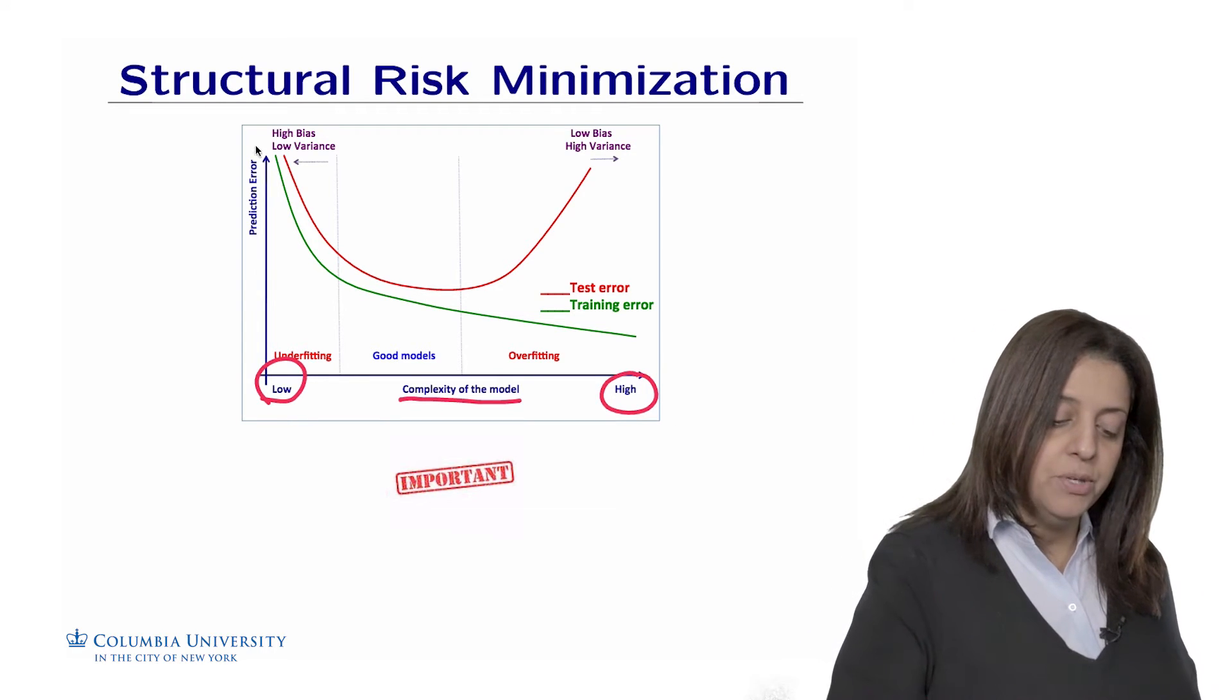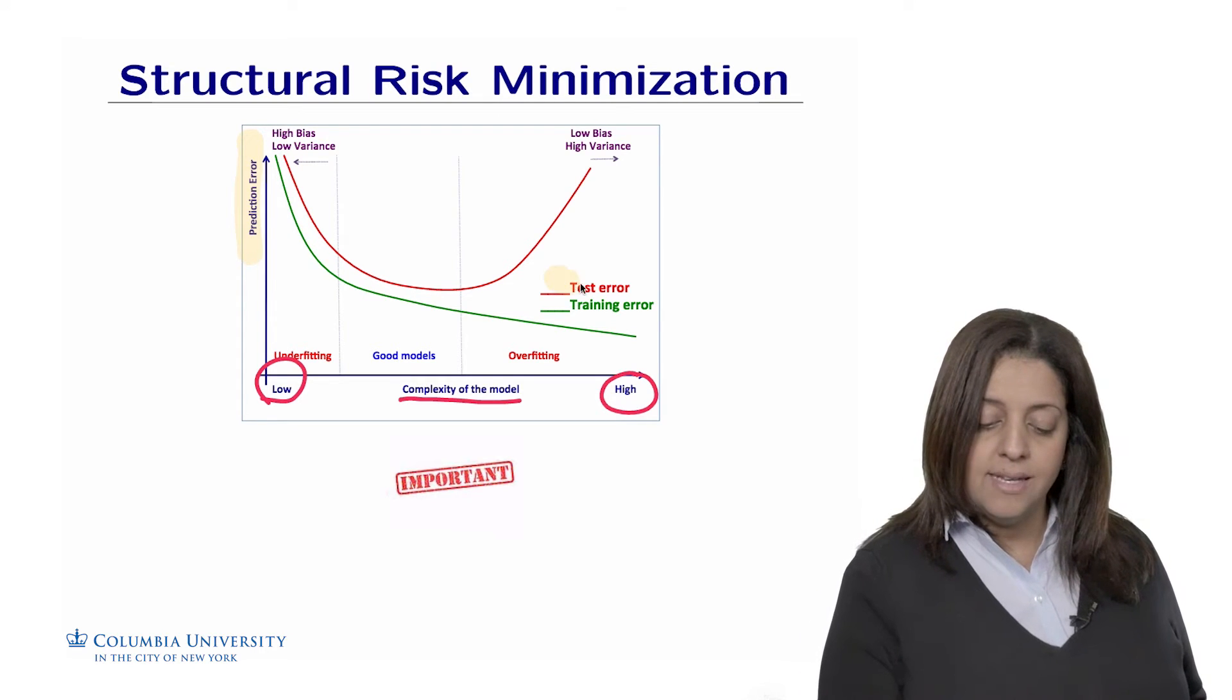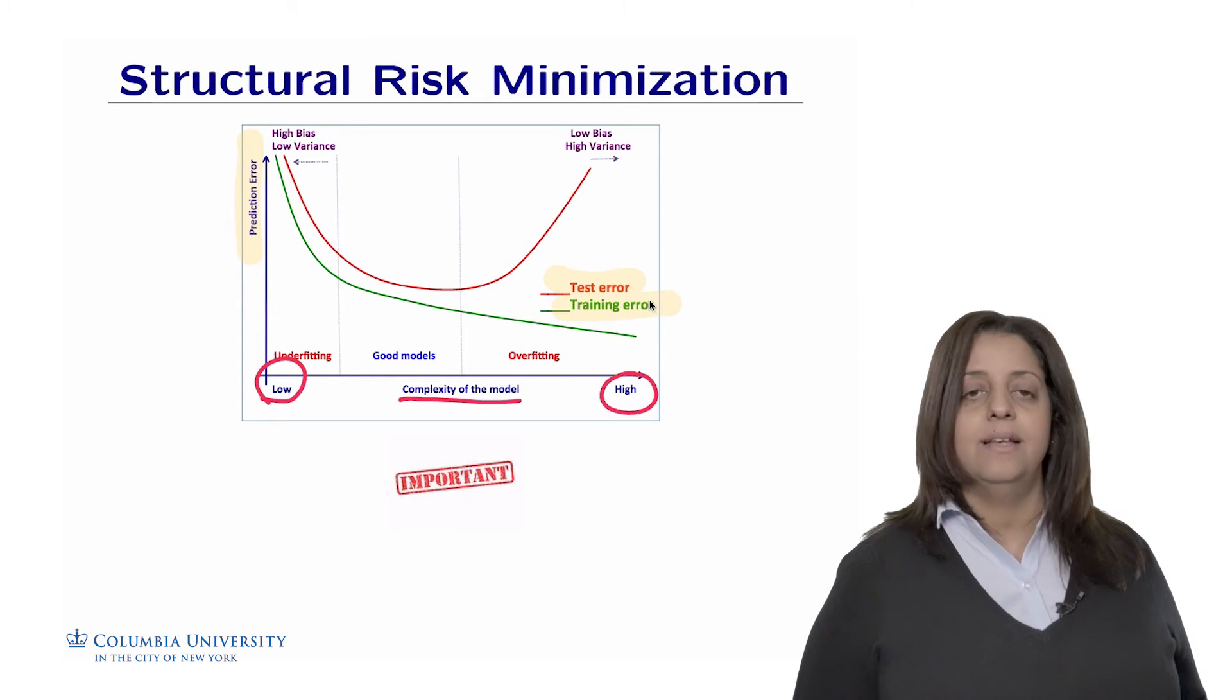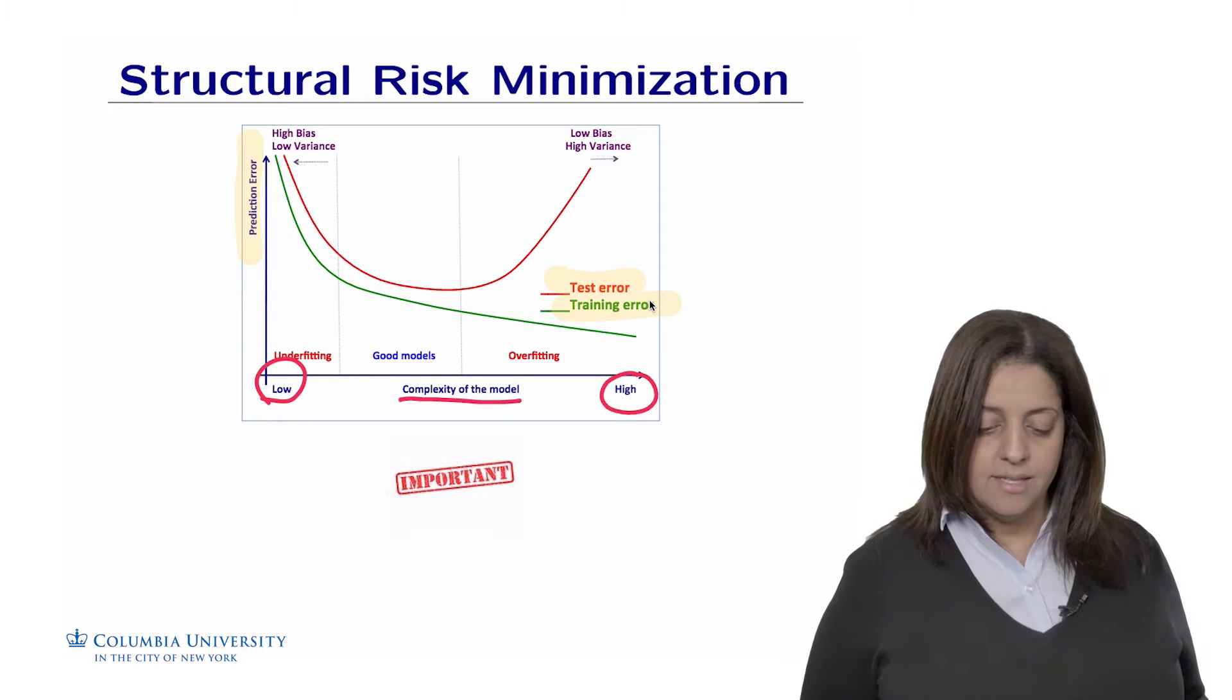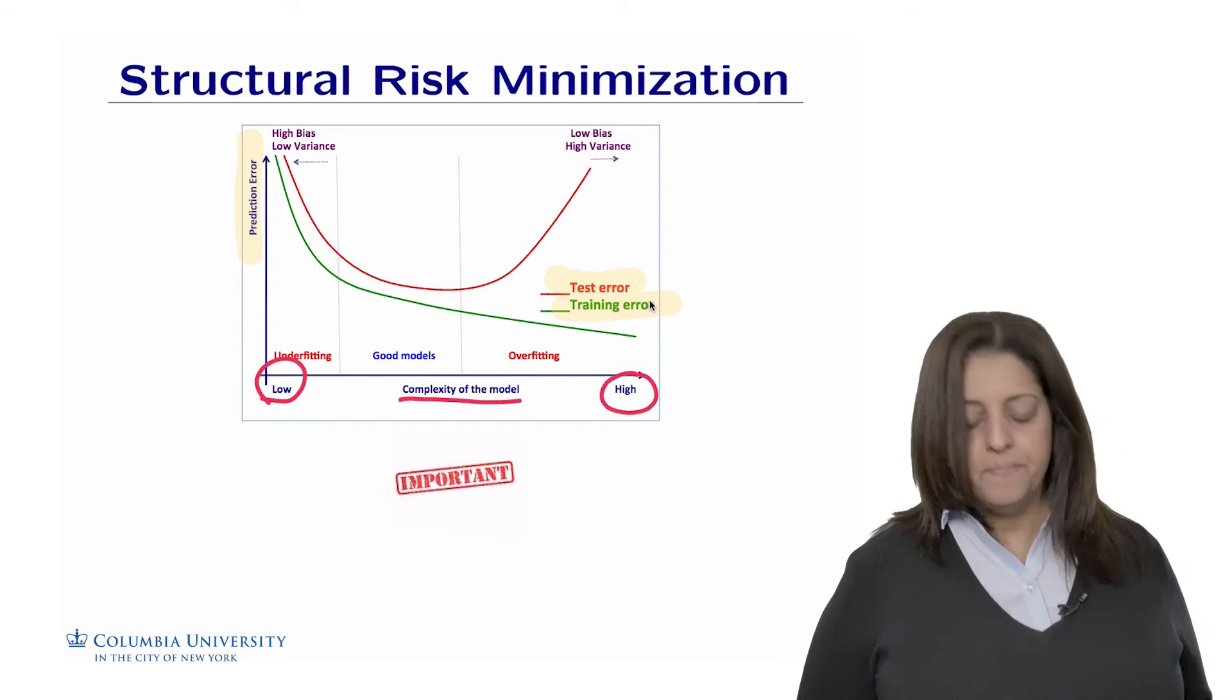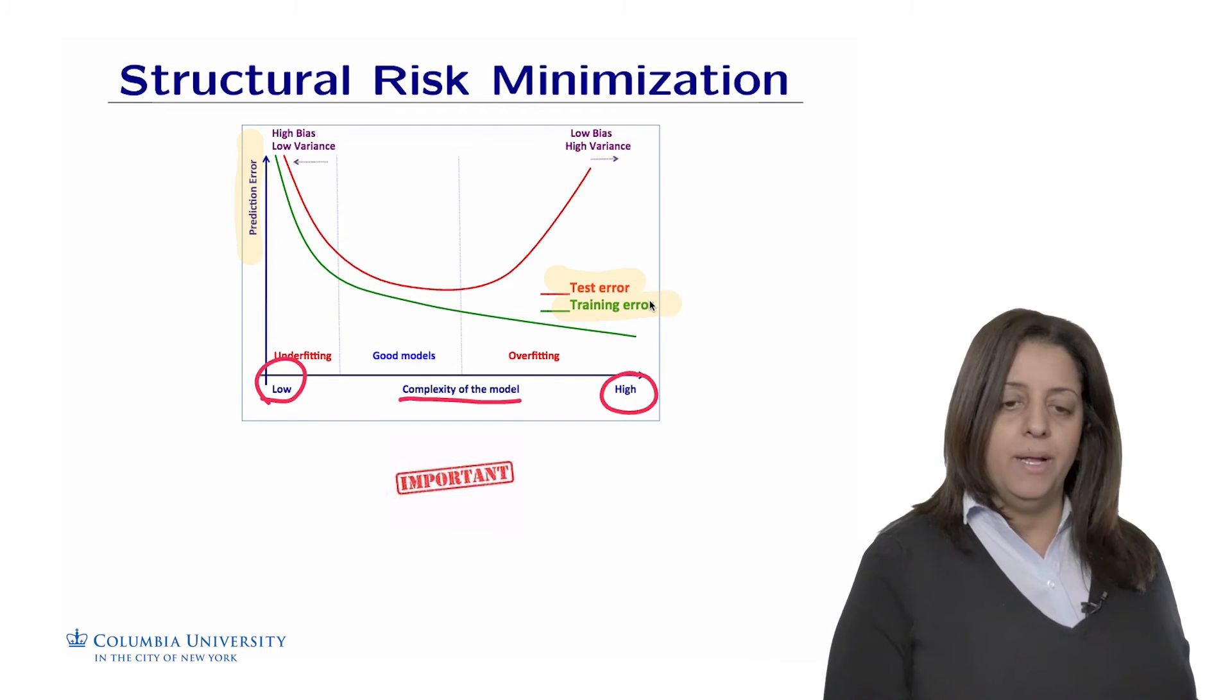On the y-axis, we have the prediction error, and here we consider the error on both the training set and test set. So I'm going to plot two curves, one for the training set in green and the test set in red. So I'm going to see the behavior of the error when we vary the complexity of the model.